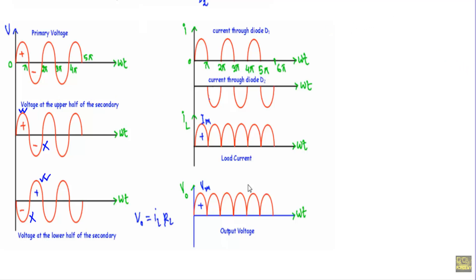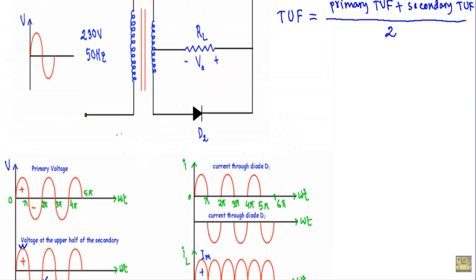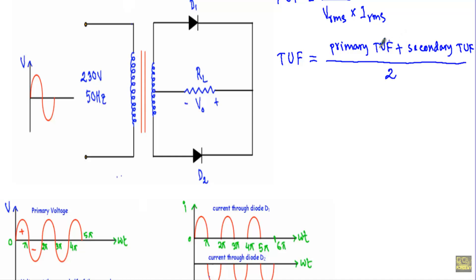Therefore we have to separately calculate the primary transformer utilization factor and the secondary transformer utilization factor. After that we will take the average of both to calculate the overall TUF for this rectifier circuit.